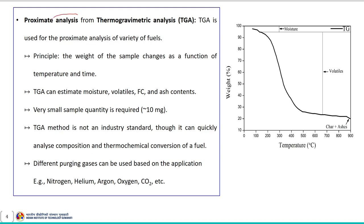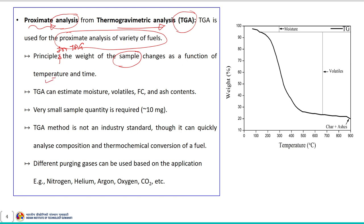Let us discuss about this new method of proximate analysis using thermo-gravimetric analysis, also known as TGA. TGA is used for the proximate analysis of a variety of fuels. In TGA, the weight of the sample changes as a function of temperature and time. The thermo-gravimetric data collected from the thermal reaction is compiled into a plot of mass or percentage of initial mass versus temperature, and this plot is referred to as a TGA curve.